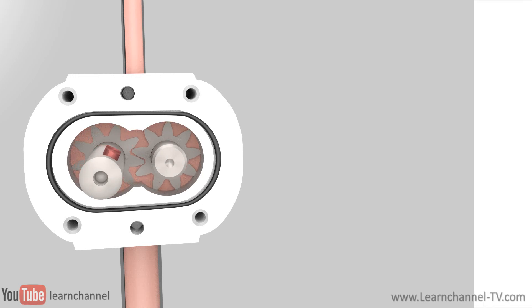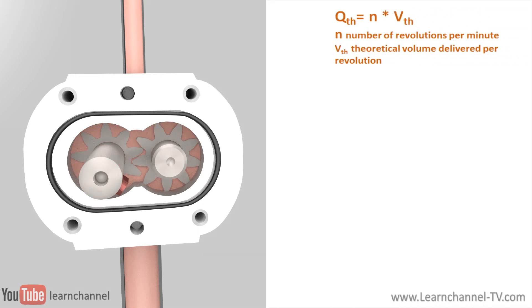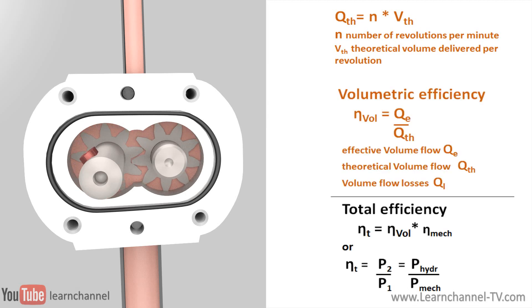In addition to the mechanical losses due to, for example, friction, every pump also has oil losses, called volumetric losses. Oil trapped between the gears and leakage reduces the volumetric efficiency of the pump.